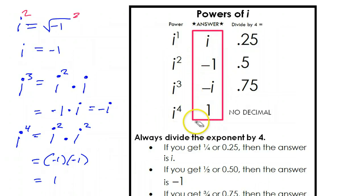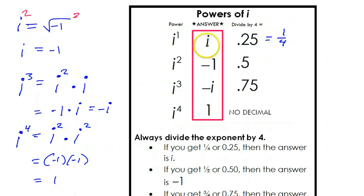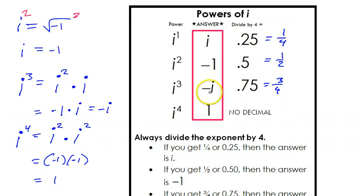Or you can just memorize these first four. After that it starts to repeat. The way that you can know no matter what power I give you is all you have to do is divide the power by 4. If you get .25, which is the same thing as 1 fourth, then that means it's i. If you get .5, which is the same thing as 1 half, then that's i squared, which is negative 1. If you get .75, or 3 fourths, then you're dealing with negative i. And if you get no decimal at all, that means you're dealing with i to the fourth power, so it'll be 1.